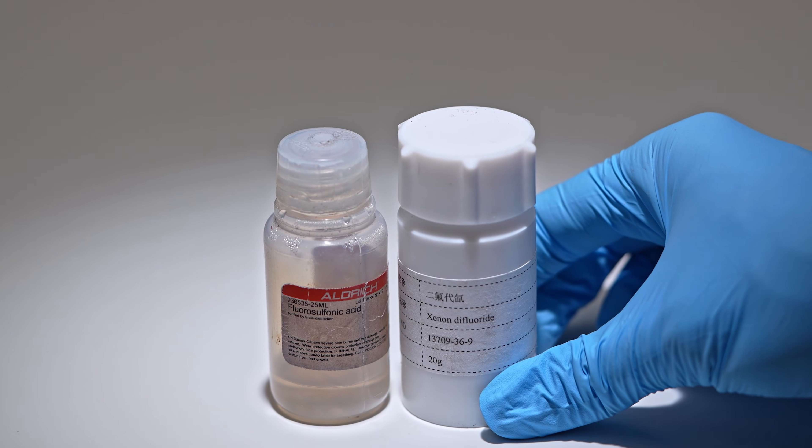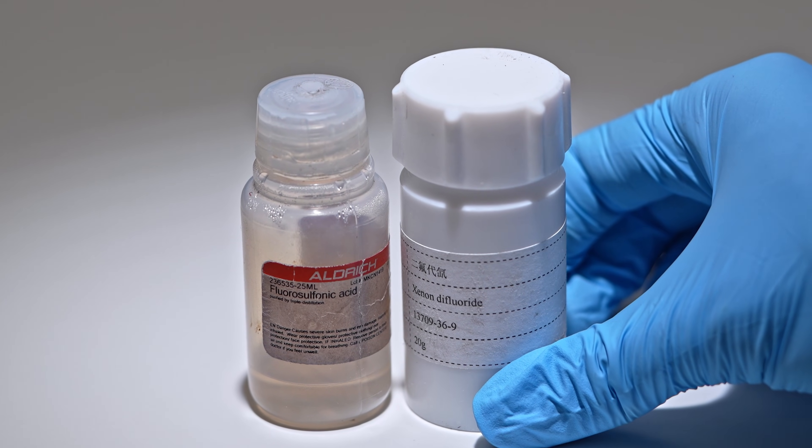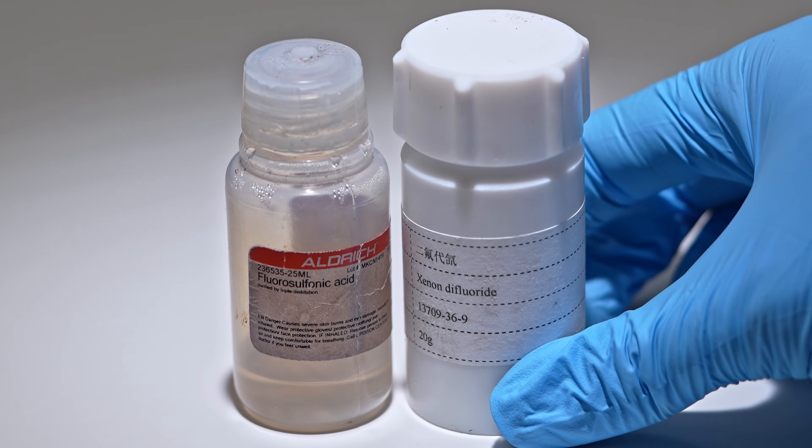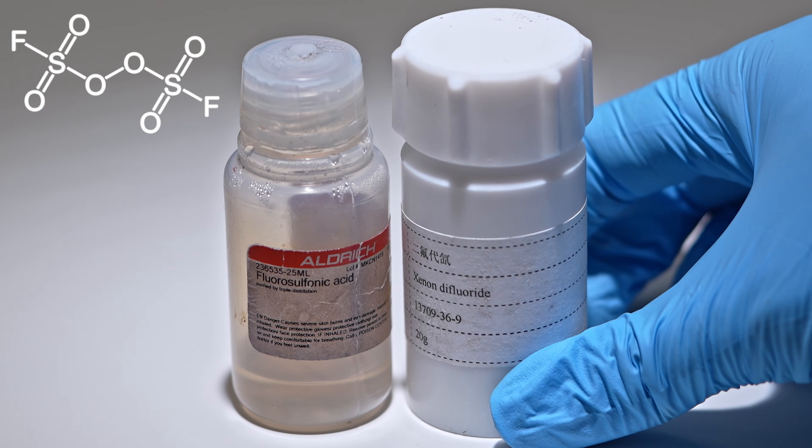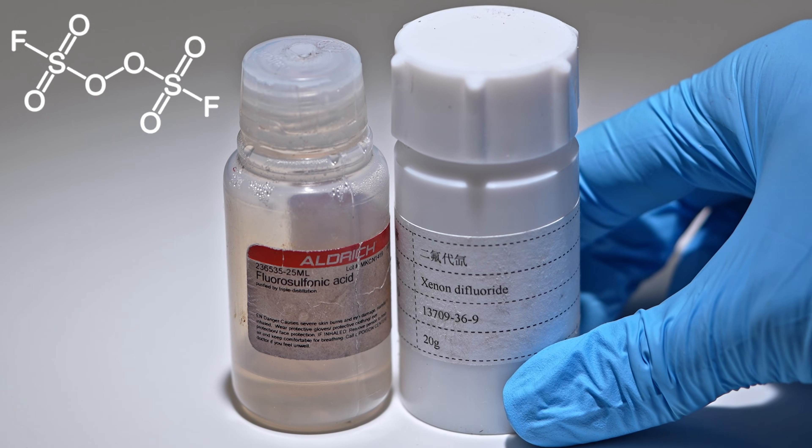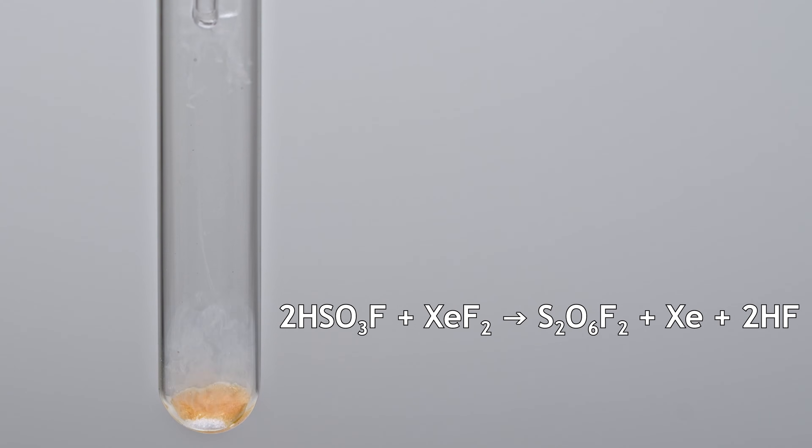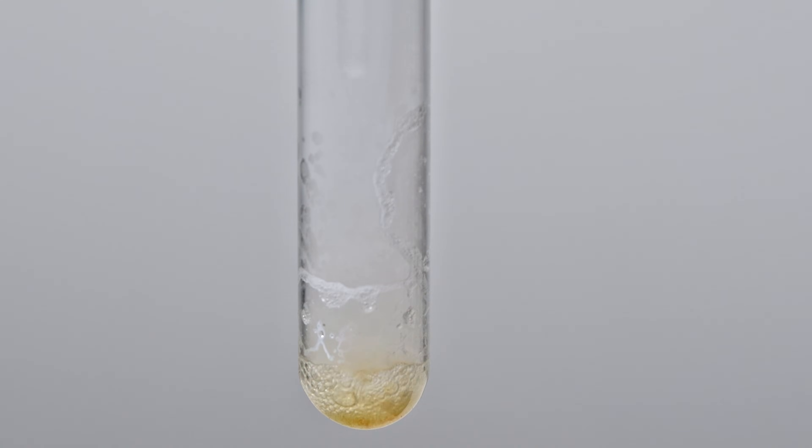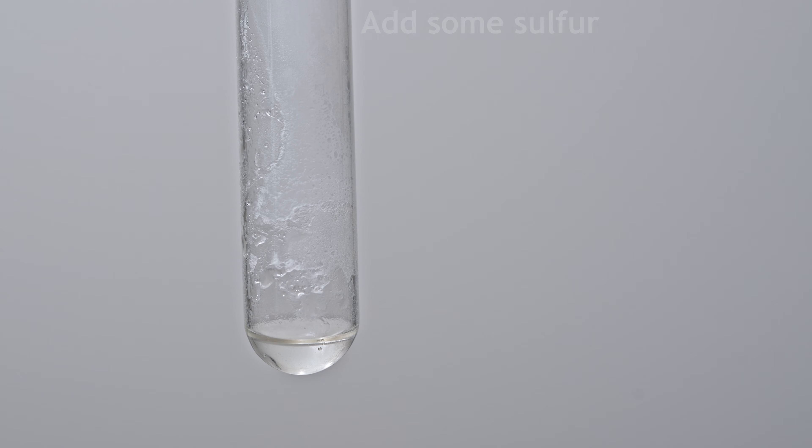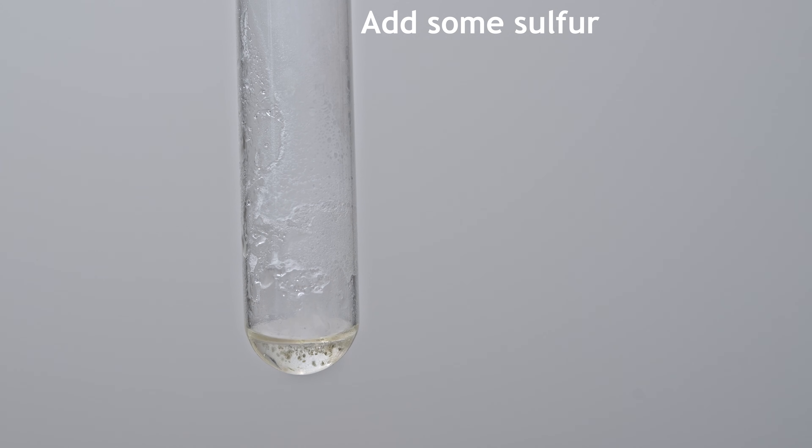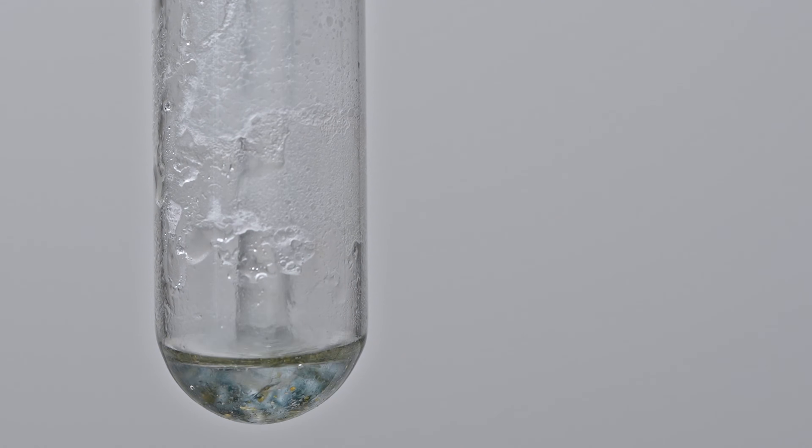If we dissolve xenon difluoride in fluorosulfuric acid, one of the main products of this reaction will be peroxydisulfuryl difluoride, or more simply, the peroxide of fluorosulfuric acid. Xenon difluoride reacts with fluorosulfuric acid quite vigorously, and the gas released in the process that we observe is xenon. The peroxydisulfuryl difluoride formed as a result of the reaction readily oxidizes sulfur, leading to the formation of the blue-colored sulfur complex cation.